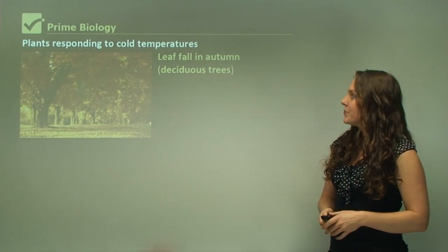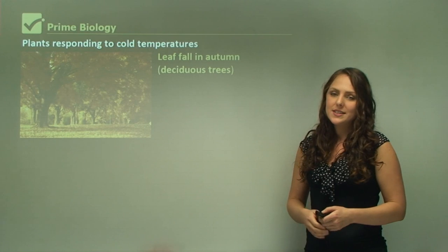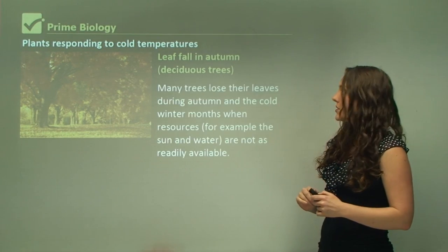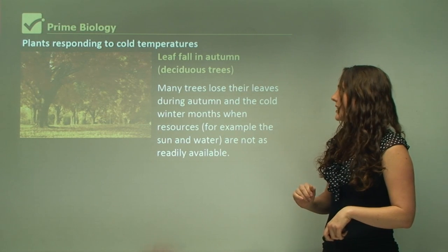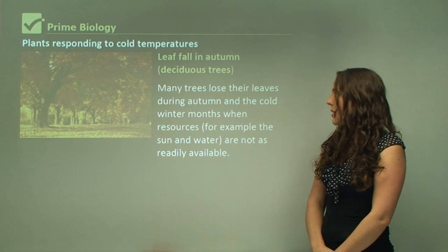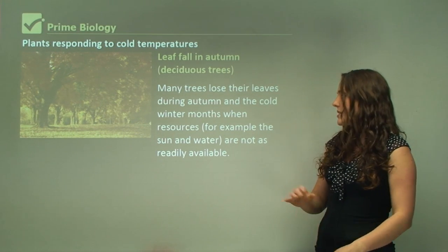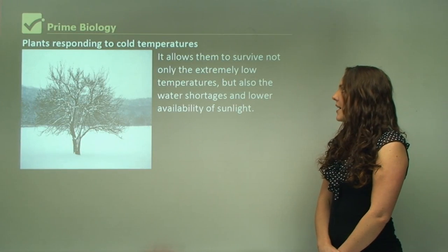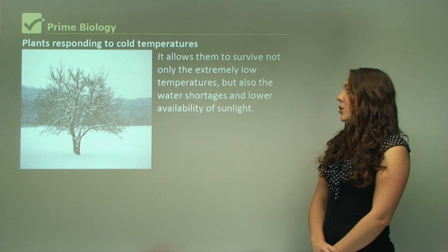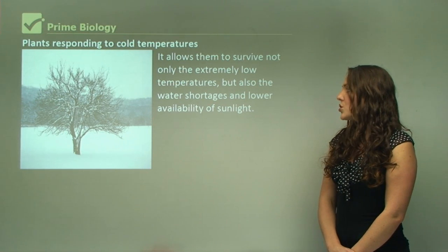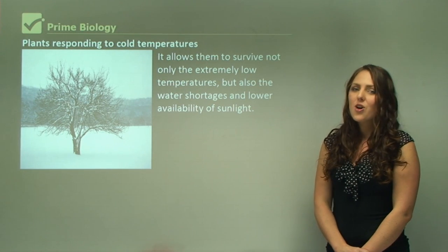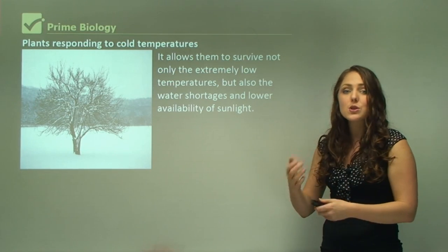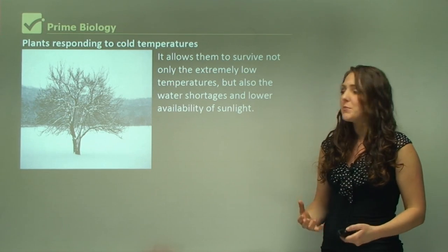Leaf fall in autumn: deciduous trees drop their leaves in autumn. Many trees lose their leaves during autumn and the cold winter months when resources such as sunlight and water are not as readily available. It allows them to survive not only extremely low temperatures, but also water shortages and lower availability of sunlight. By dropping their leaves, they're not having to supply sugars to those leaves — for example, the beech tree found in Tasmania.